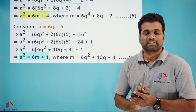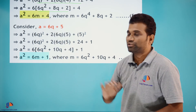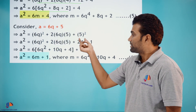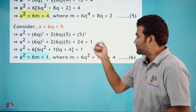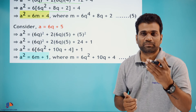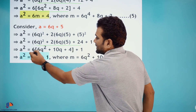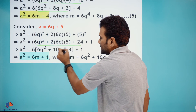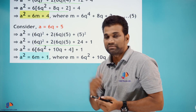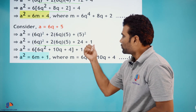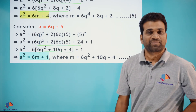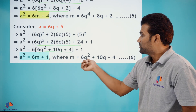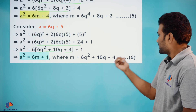Finally, consider the last form: a = 6q+5. Squaring both sides: a² = 36q² + 60q + 25. We split 25 as 24+1. Taking 6 common: a² = 6(6q²+10q+4) + 1. You can see this is of the form 6(something) + 1. So a² = 6m+1, where m = 6q²+10q+4. Let this be equation (6).